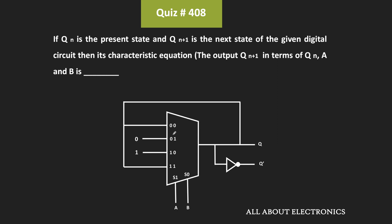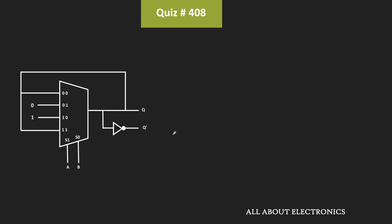To find that, first let us see the truth table of the given circuit. If you look at this circuit, this is basically a multiplexer — or to be precise, it is the 4x1 multiplexer. As you can see, it has 4 inputs and 1 output, and to select any one of the 4 inputs, it has 2 selection lines.